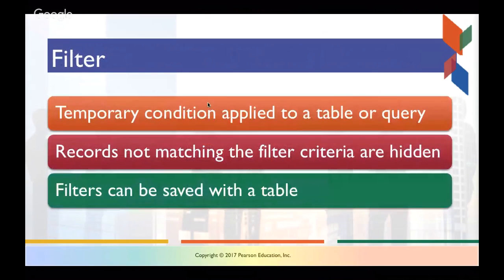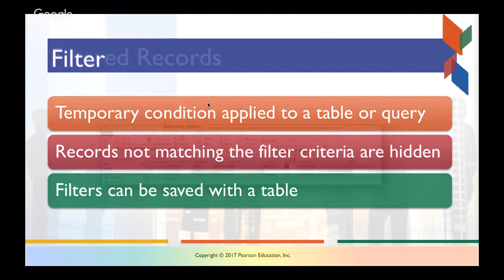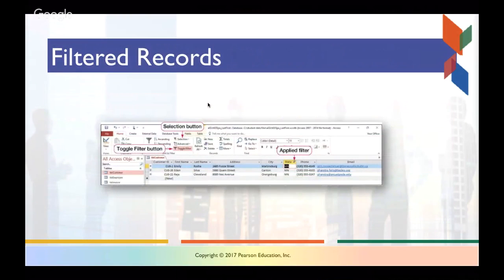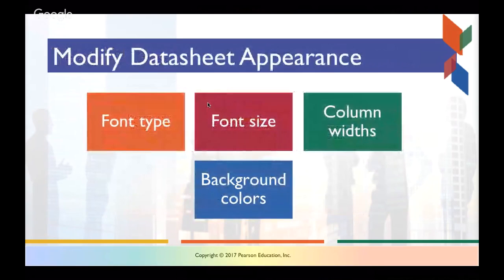A filter is simply a very basic query — it's a temporary condition applied to a table or query, but it's really about extracting only the data you want. Records not matching the filter criteria are hidden, and you can save these filters in a table or in a query. You can simply apply a filter using the funnel button and associated commands, and what's going on underneath the hood is an actual query. So let's move on to talking about how to use queries and how to save them.